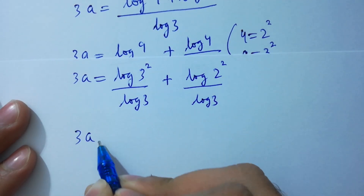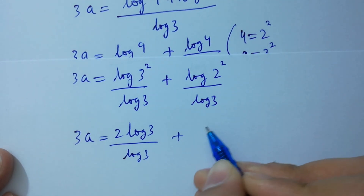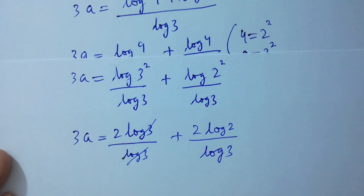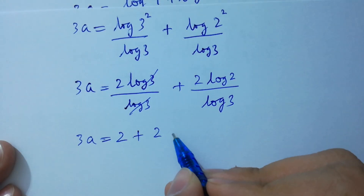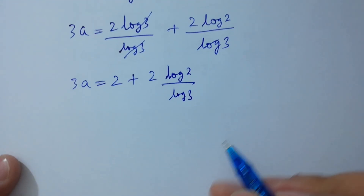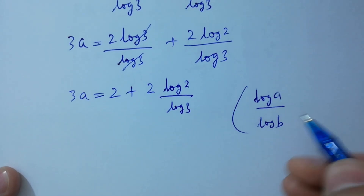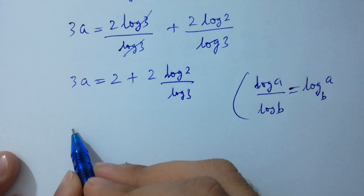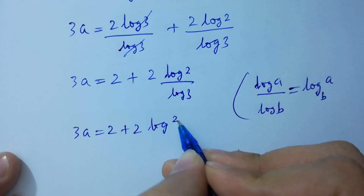So 3a equals 2 log 3 over log 3 plus 2 log 2 over log 3. Log 3 and log 3 cancel, giving 3a equals 2 plus 2 log 2 over log 3. As log A over log B equals log A to the base B, we have 3a equals 2 plus 2 log 2 to the base 3.